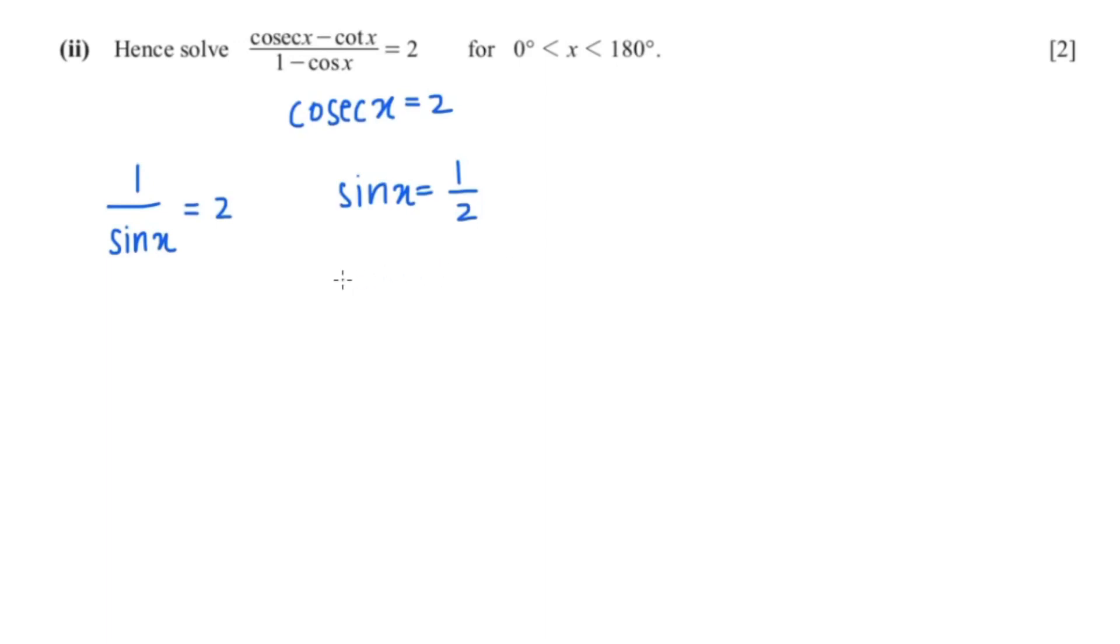To find x, I'm going to find the inverse of sine of 1 over 2, and that would give me 30 degrees.